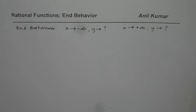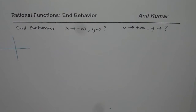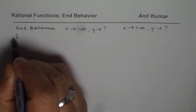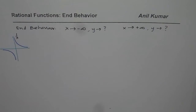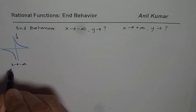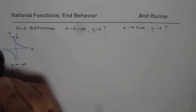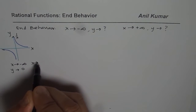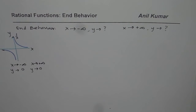We will take a few examples — things will be absolutely clear. Let us take the example of 1 over x, our parent reciprocal function. The graph of this function is kind of like this. What we observe is that as x approaches negative infinity, y approaches 0. It becomes closer and closer to 0. And as x approaches positive infinity, y again approaches 0. So that is the end behavior of 1 over x.